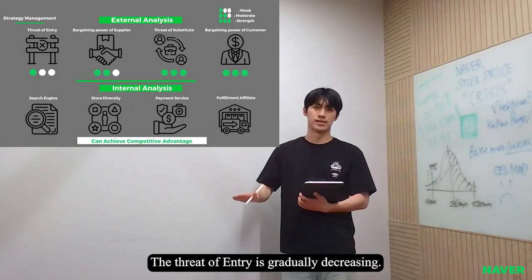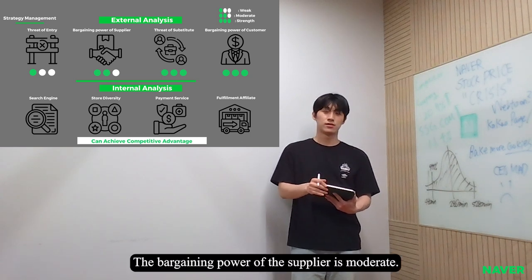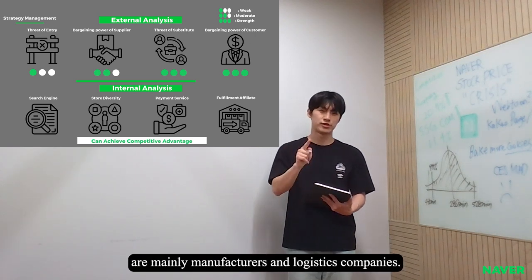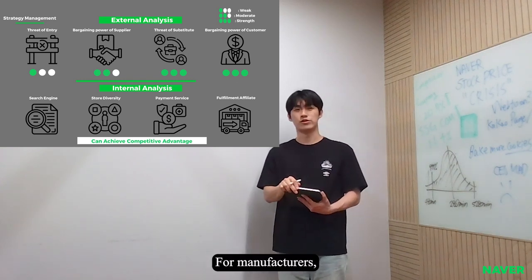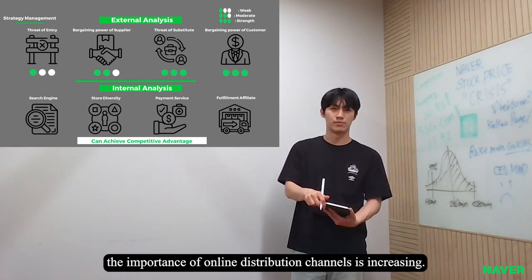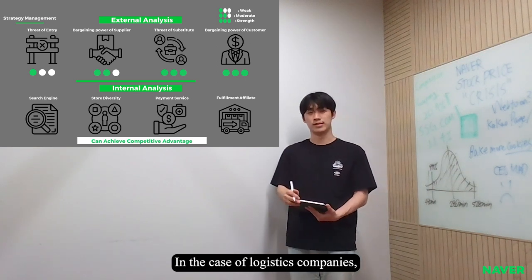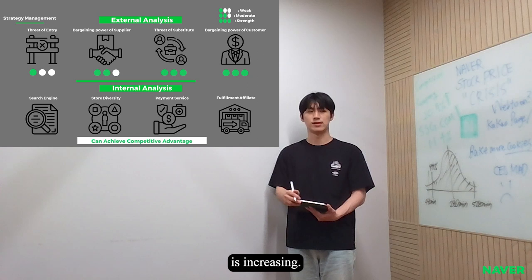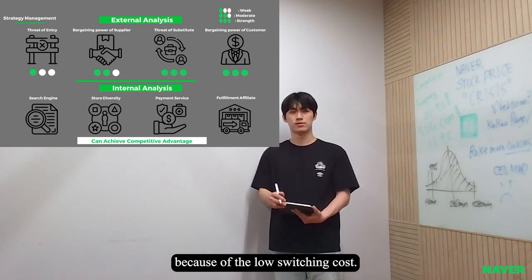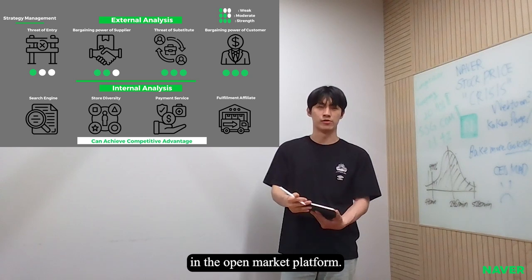The threat of entry is gradually decreasing. The strong competition causes price wars with lower fees to attract sellers. The bargaining power of suppliers is moderate. The suppliers in the e-commerce market are mainly manufacturers and logistics companies. For manufacturers, distribution channels are of high importance. As the e-commerce market grows, the importance of online distribution channels is increasing. In the case of real estate companies, the importance of differentiated services is increasing. The bargaining power of buyers is strong because of low route switching costs. The threat of substitutes is high. However, Neighbor has a strong comparative advantage in the open market platform.